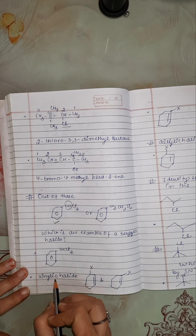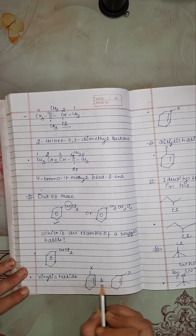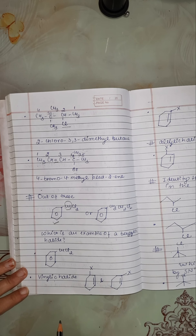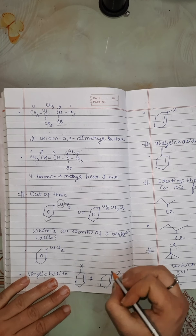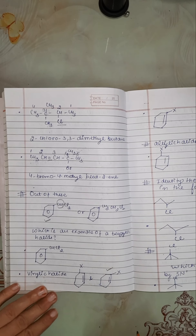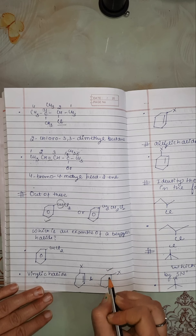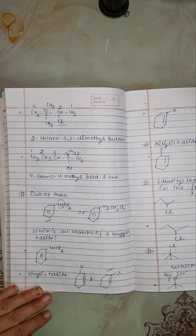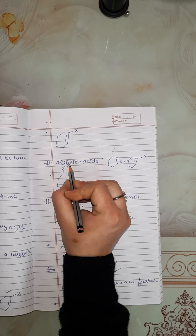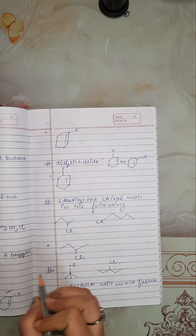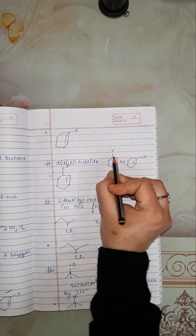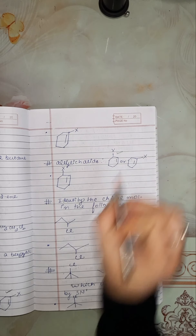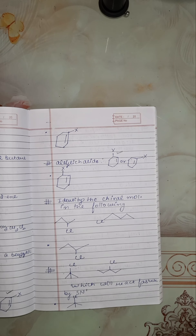Next is: which is the example of a vinylic halide — this one or that one? Vinylic means double bond then halogen is attached. So this will be the example of a vinylic halide. For the next pair, again vinylic is double-then-single, so this will be the example of a vinylic halide.